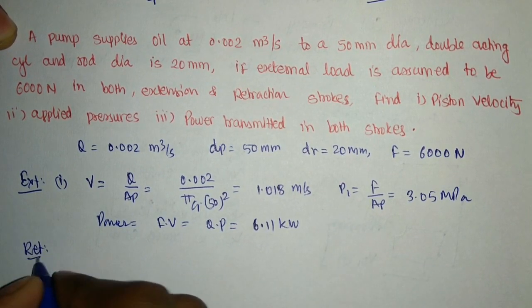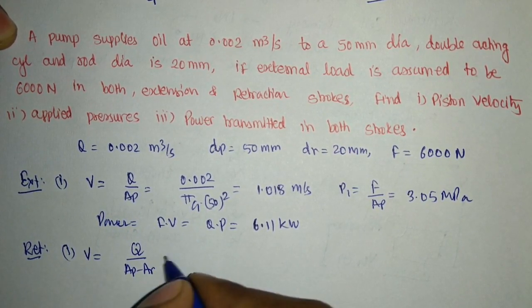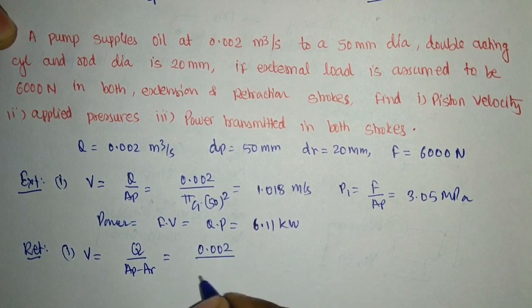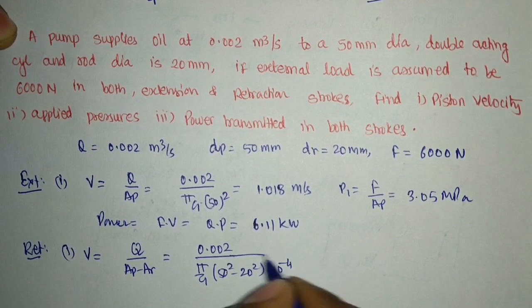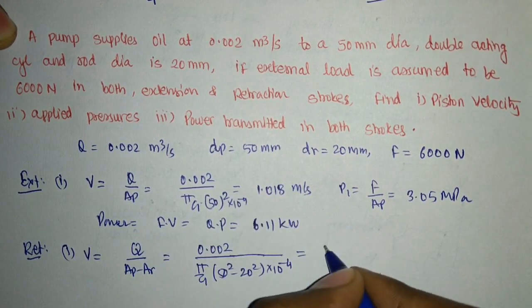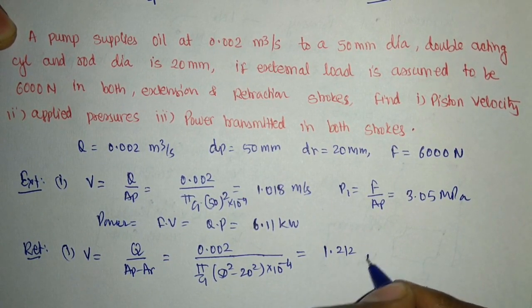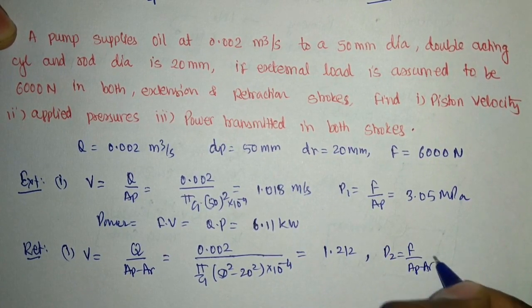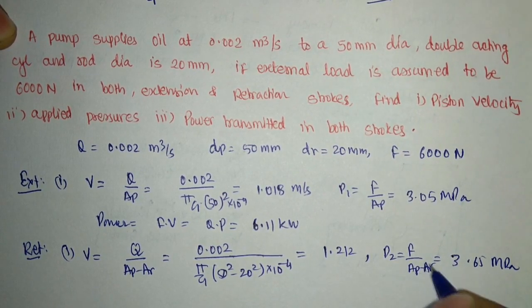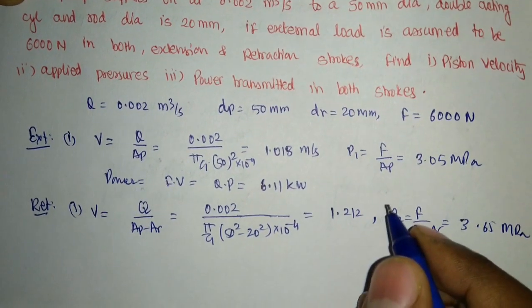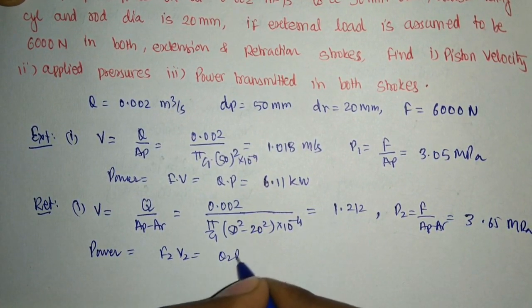For the retraction stroke of the same problem: velocity = q / (Ap − Ar) = 0.002 / (π/4 × (0.05² − 0.02²)) = 1.212 m/s, which is higher because the effective area is reduced. Pressure = F / (Ap − Ar) = 3.65 MPa (also increased). Power = F × v = 7.3 kW.